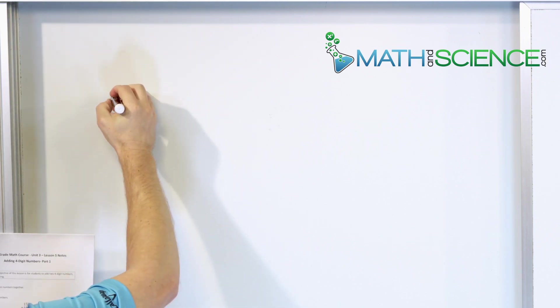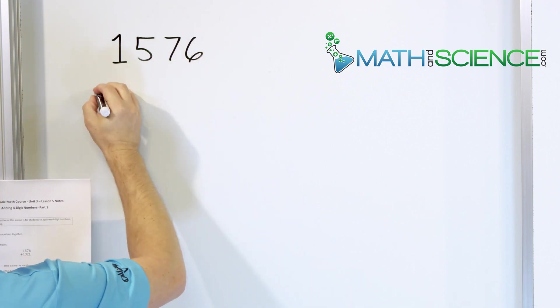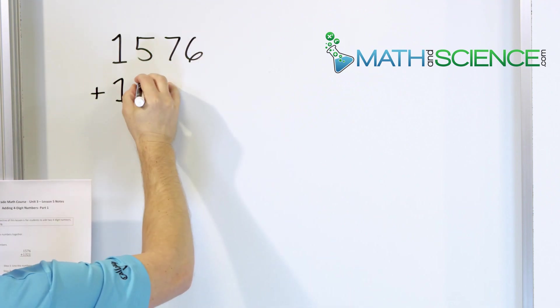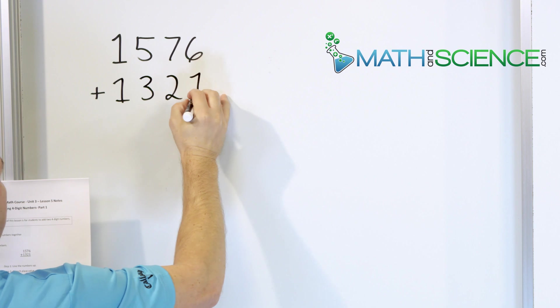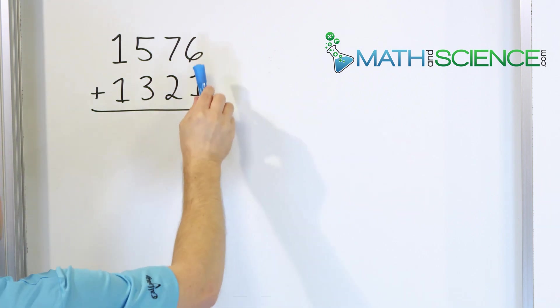Let's say that I'm trying to add the number 1,576, and I'll add to that 1,321. So again, we always start in the right-hand column.